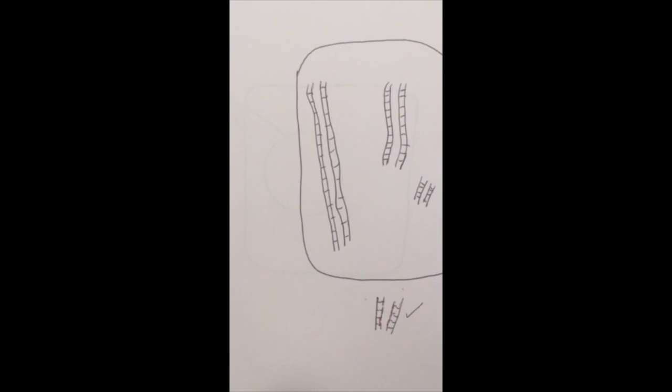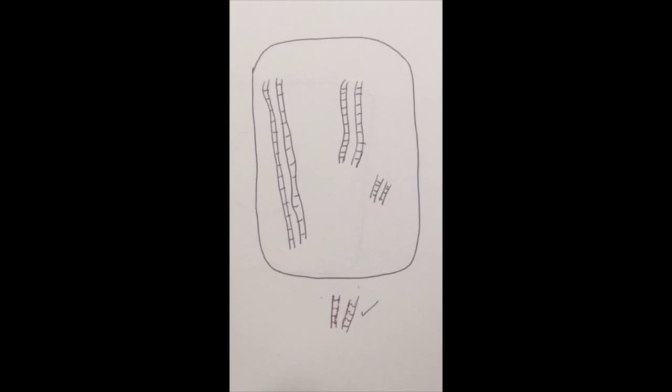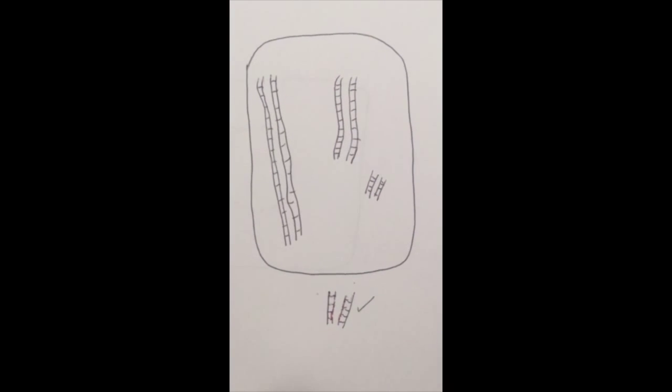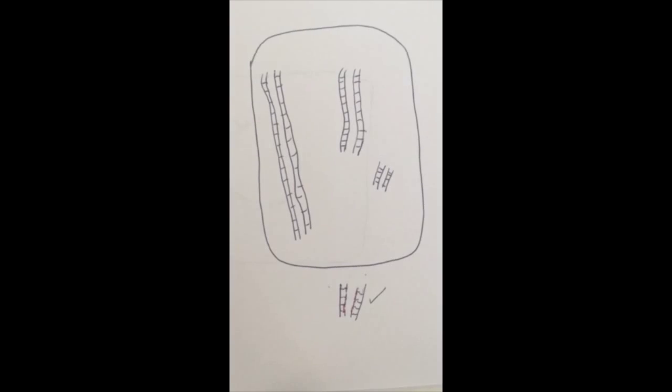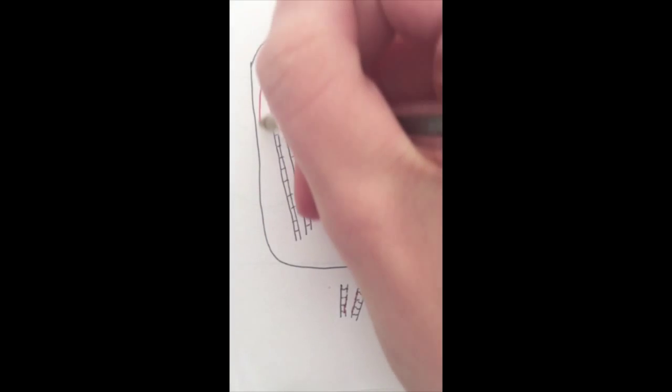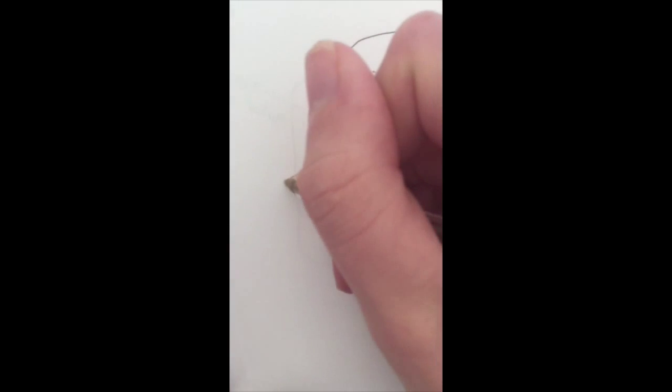What happens in prophase then is for the first time we get to see chromosomes appear. That's because this DNA, this chromatin, starts to condense and coil. If I take, for example, let's take the big ones, this one here, this one here, and then just draw over here.